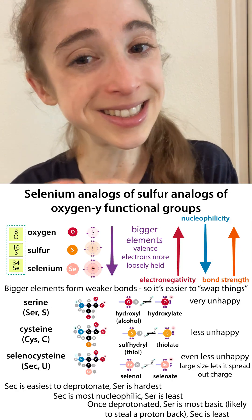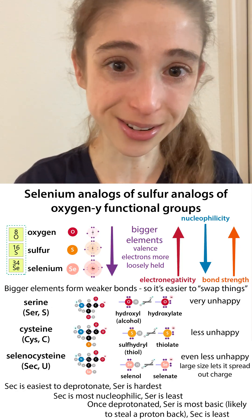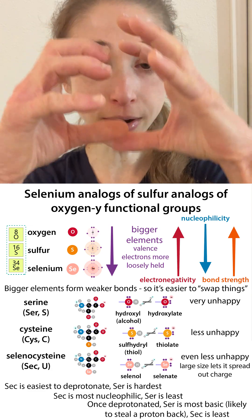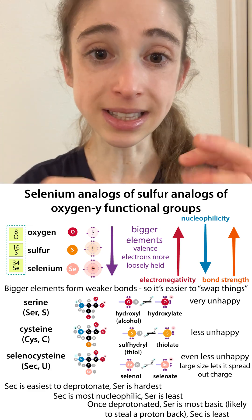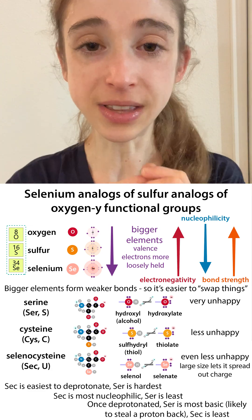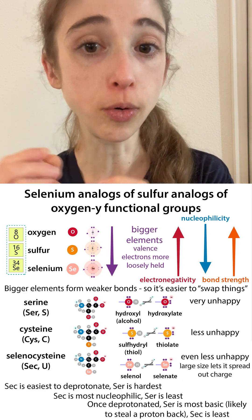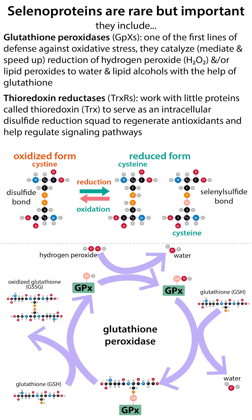Selenocysteine is the selenium analog of cysteine, which is the sulfur analog of serine. They're getting bigger and bigger in atoms, and so selenium is kind of the best of these at participating in reversible redox reactions, which makes it great for antioxidant defense, serving important roles in antioxidant proteins such as glutathione peroxidase and thioredoxin reductase.